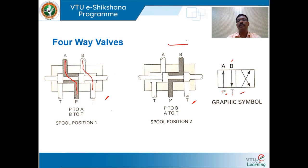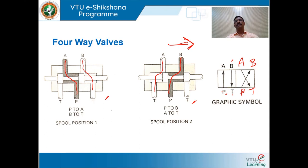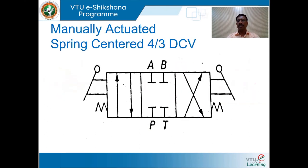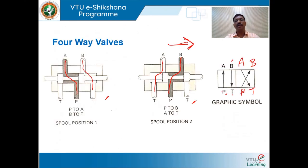When the spool slides within the valve body and moves to the second switching position, P is connected with B and A is connected with T. This is how a four-way valve works. A three-way two-position valve is used to control a single acting cylinder, and a four-way two-position valve is used to control double acting cylinders.